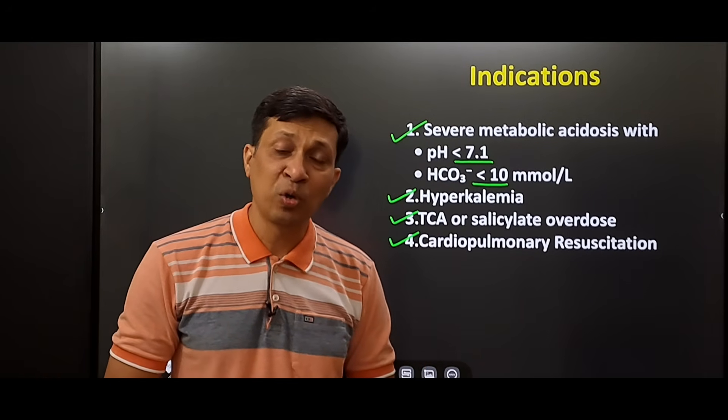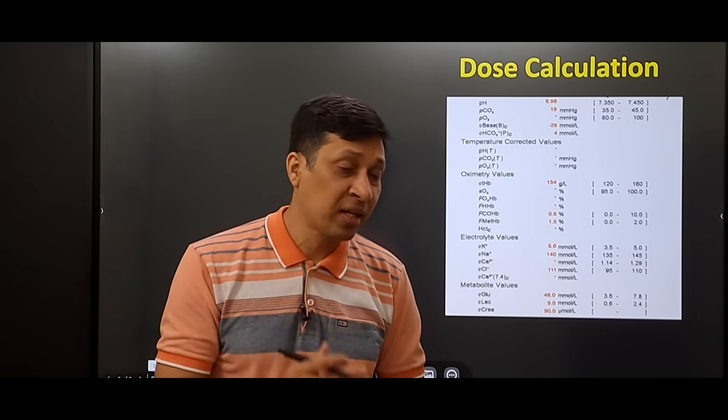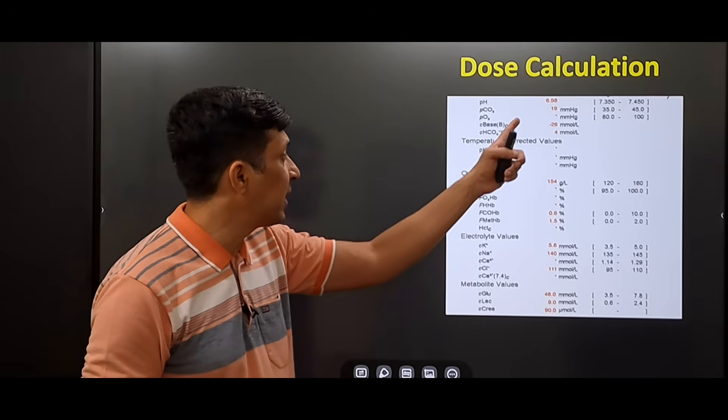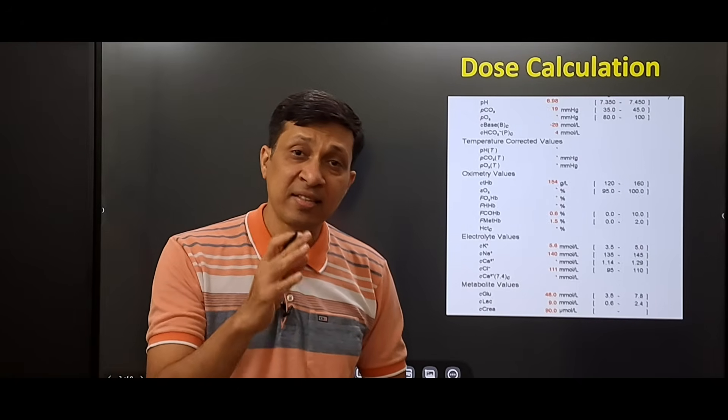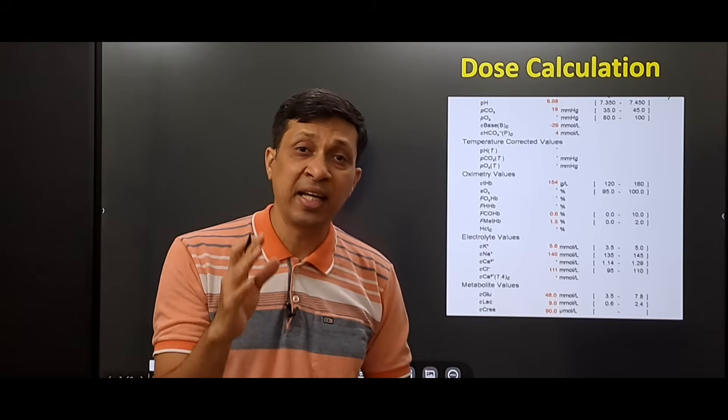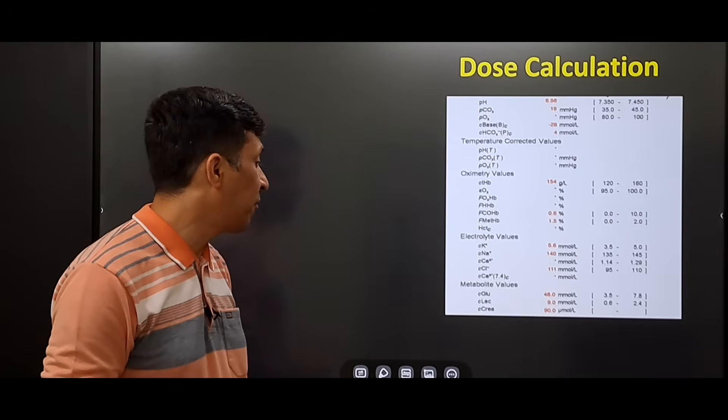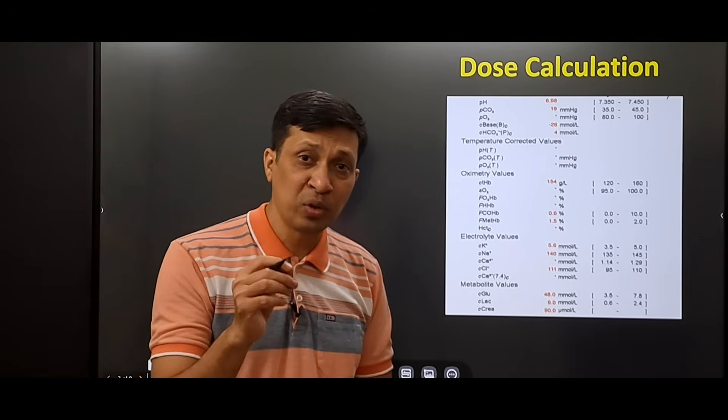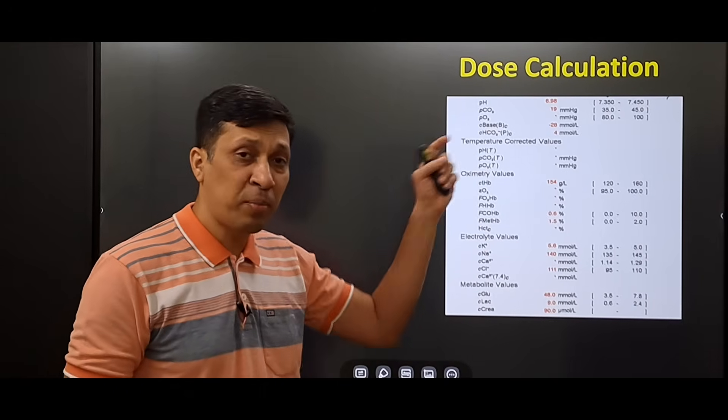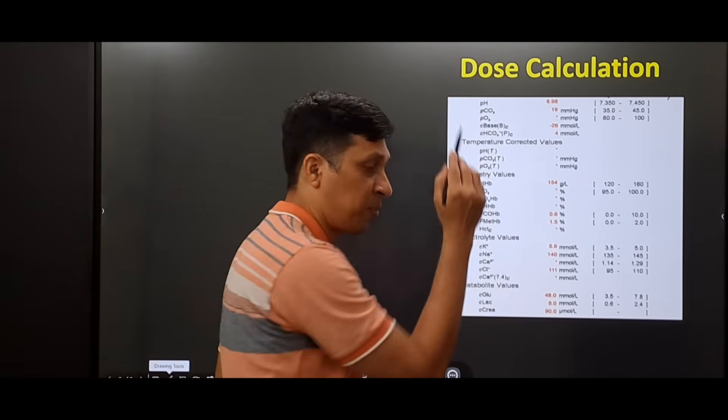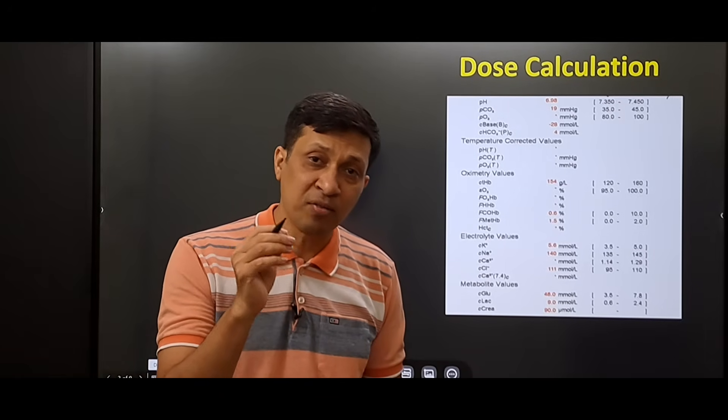Now we go to the actual steps. Here is the ABG of a patient, and the pH is 6.98, meaning the pH is less than 7.1. There is an indication of using injection sodium bicarbonate. We will require one value to be put in our formula, and that is bicarbonate. Here the level is 4.